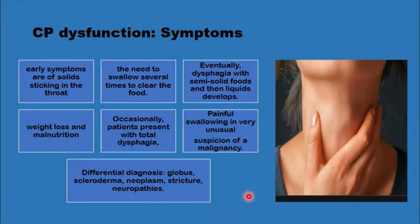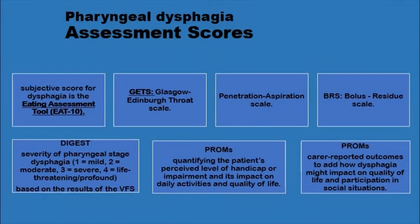The differential diagnosis includes globus, scleroderma, strictures, and neoplasm — all of which must be ruled out. The severity of the condition, the progression of disease, and response to various treatment options should be assessed and documented repeatedly using validated assessment scales.